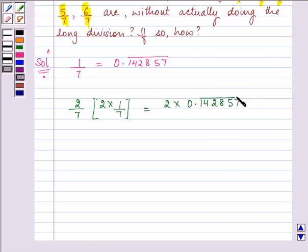The value which is given to us, we will just multiply it by 2 and we will get our answer. So it is equal to 0.285714. This is how you will do the required question.